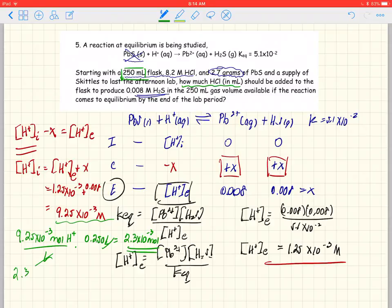We have 2.3 times 10 to the minus 3 moles of H+. And what we want to do is use the molarity. It's 8.2 molar. That's 8.2 moles per liter, or 1 liter per 8.2 moles. And we can go ahead, then,